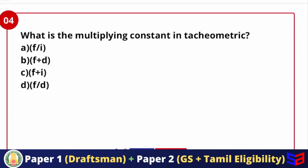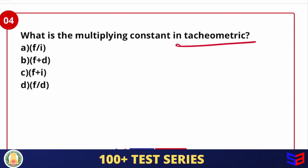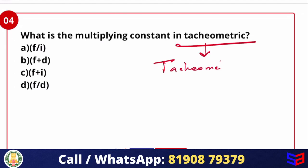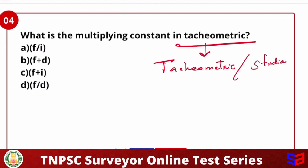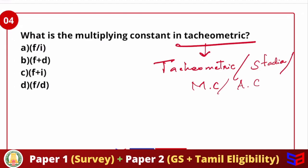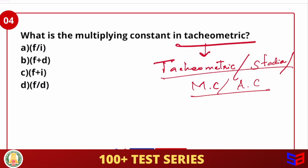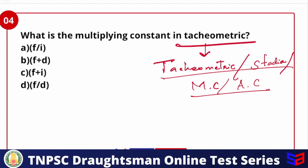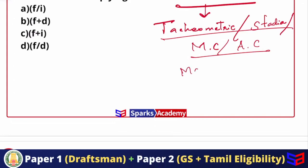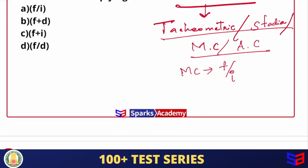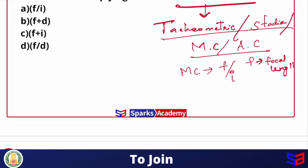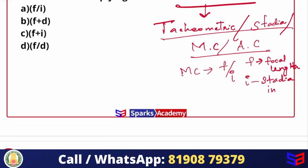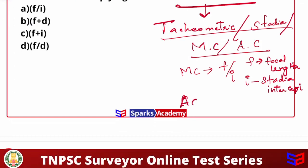Next question: what is the multiplying constant in a tachymeter? The options are f/i, f+d, f+i, and f/d. The tachymetric constant, also called stadia constant or multiplying constant, represents f divided by i, where f is the focal length. The additive constant is f plus d.